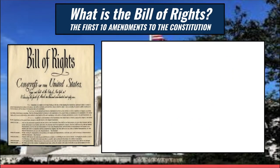There is something we call the Bill of Rights, which is the first 10 amendments to the Constitution. The Bill of Rights was promised when the Constitution was sent to the states to be ratified. People were very afraid of it because it didn't spell out what rights citizens have, creating a powerful central government that could trample over everybody's rights. So a promise was made: if you ratify the Constitution, the first Congress will create a Bill of Rights to be added to the Constitution.